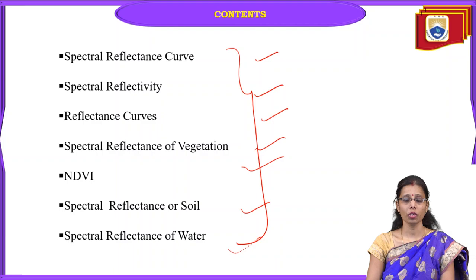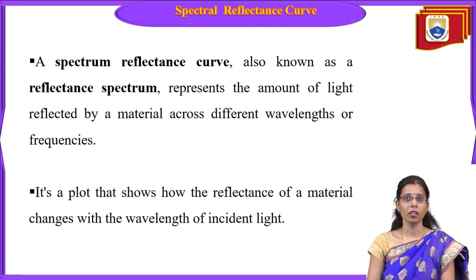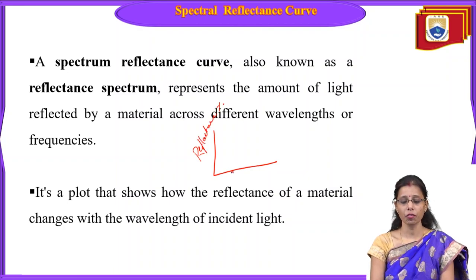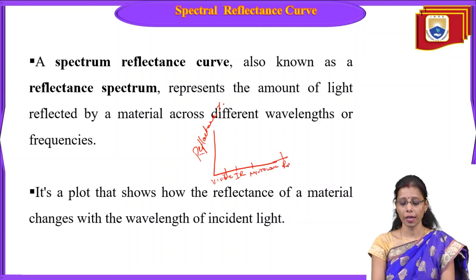Before discussing soil, water, and vegetation, let us discuss what a spectral reflectance curve is. A spectral reflectance curve is a graph of reflectance — on one axis we have reflectance percentage and on the other axis we have different band regions, starting from the visible region, then infrared, microwave, and radio/television regions used for remote sensing.